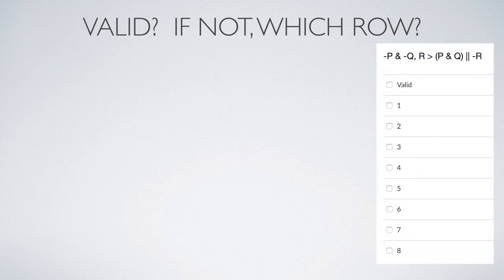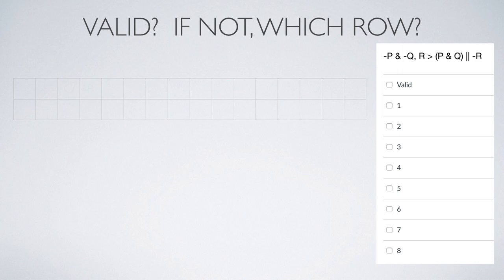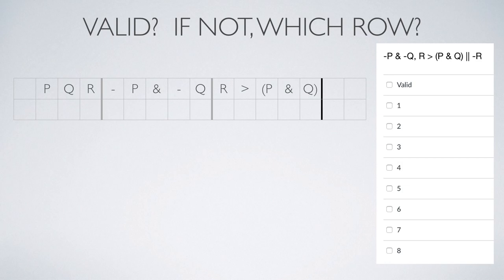Let's try another one — this time with three variables. Since we've seen a full truth table, let's try just an abbreviated truth table. We put in our three variables P, Q, and R. Then our first premise: not P and not Q (with a gray line indicating it's a premise). Then our second premise: if R, then the conjunction of P and Q, followed by a solid black line. And our conclusion is not R.